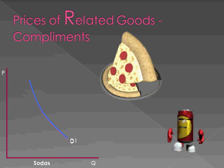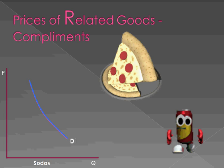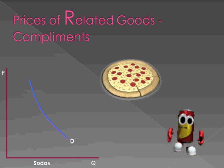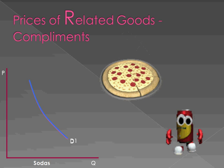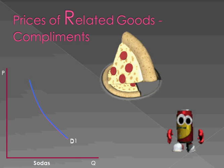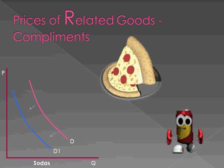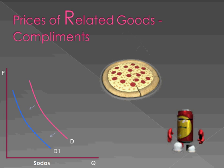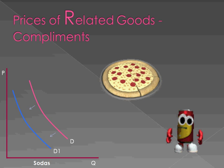How about complements? There's an inverse relationship between complements and demand. Let's say that the price of pizza is still going up and everybody likes to drink soda with their pizza. If that happens, the demand for sodas is going to decrease because the price of pizzas goes up — we're not going to drink as much soda.